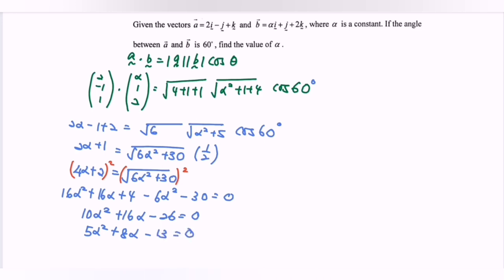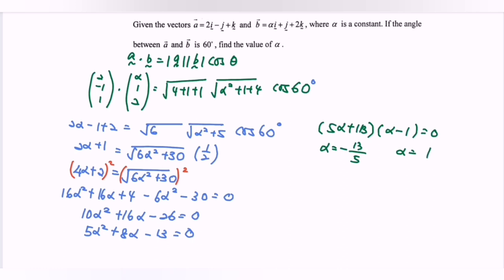Factorizing: (5 alpha + 13)(alpha - 1) = 0. So alpha equals negative 13/5 or alpha equals 1. Substituting back, we verify that alpha equals 1 is valid, meaning the angle between vector A and vector B is 60° when alpha equals 1.